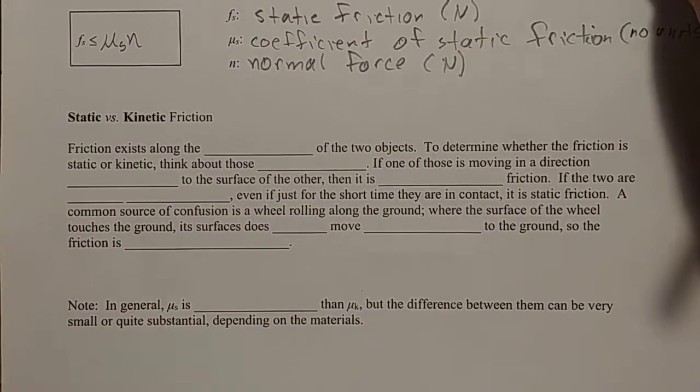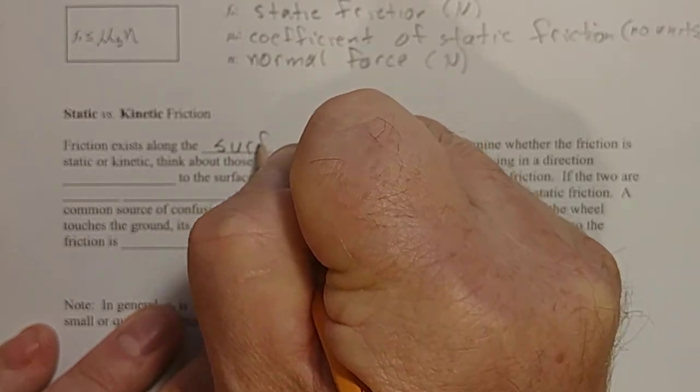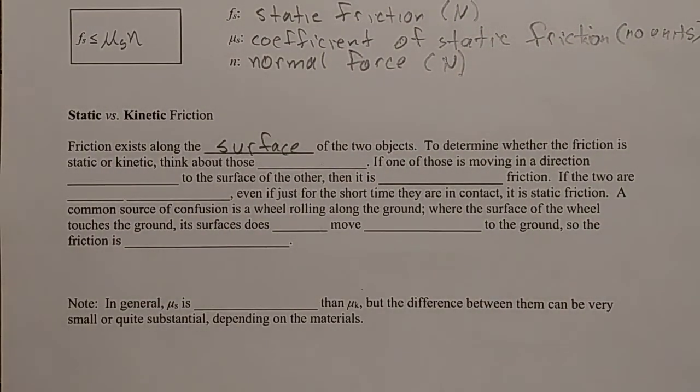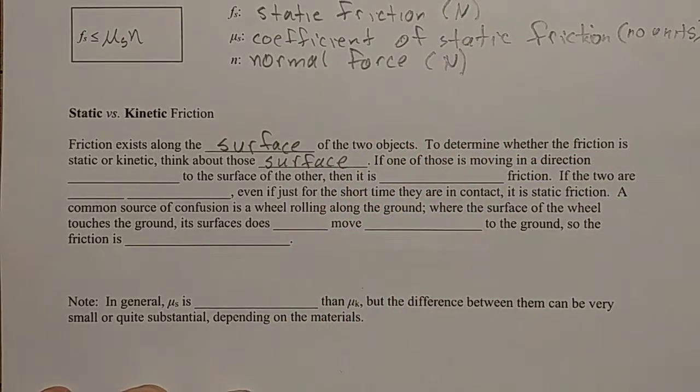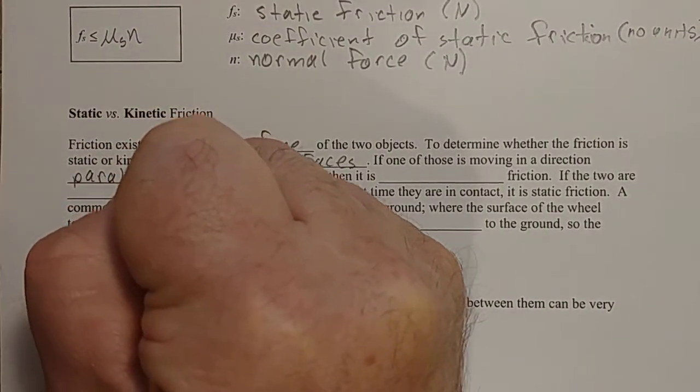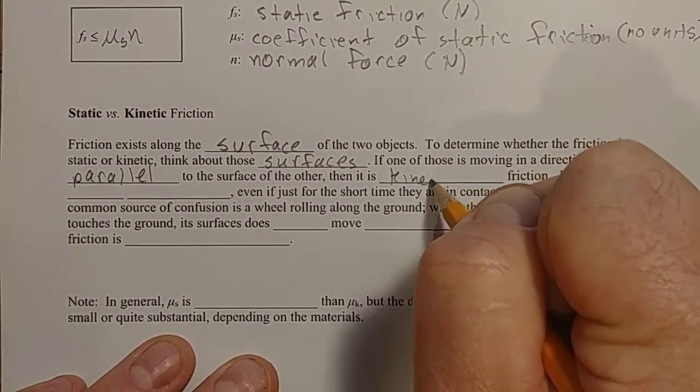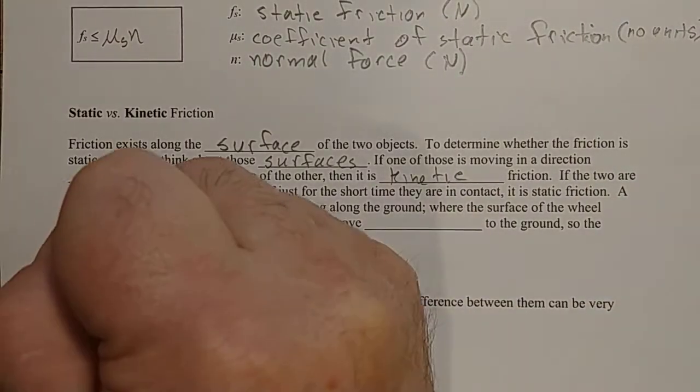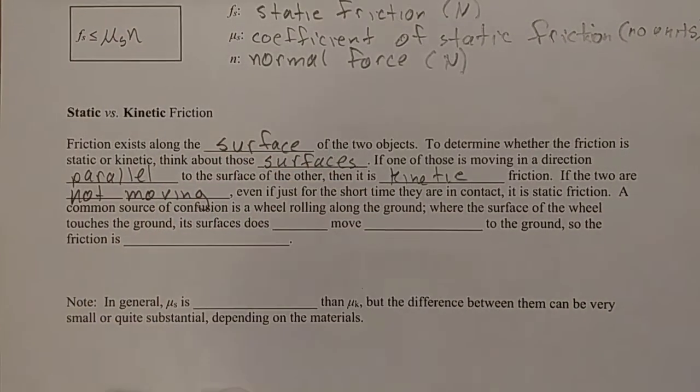So we have these two types of friction, and let's clarify the difference between the two. Friction always exists along the surface of the two objects. It's a contact force, where two surfaces are pushed together, and so there is a force between them which is parallel to that surface. So if you want to know whether friction is kinetic or static, think about those surfaces and see is there any movement along those surfaces. If one of those is moving in a direction parallel to the surface of the other, then it is kinetic friction. If the two are not moving relative to each other, even just for the short time they are in contact, it is static friction.